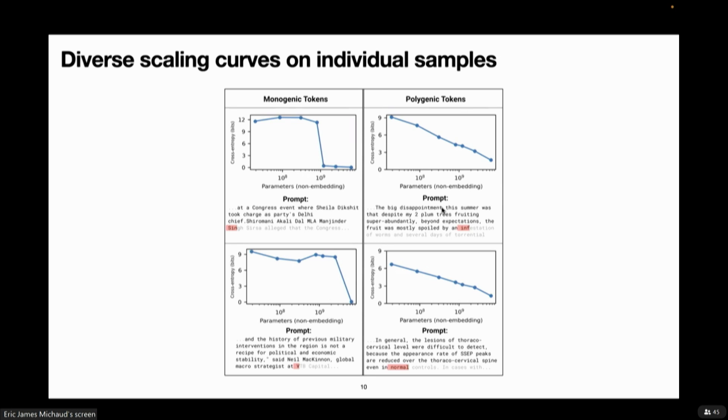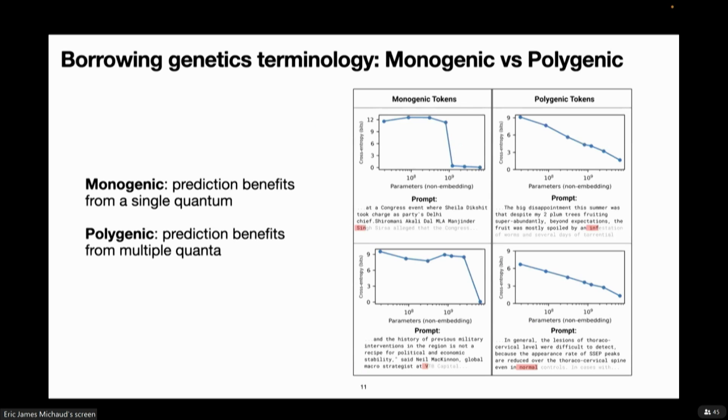So I guess if we're going to believe our theory, then maybe what's going on in these samples is that many of these quanta are improving the model's prediction a little bit, and they're being learned at different scales, leading to more gradual scaling. The idea here is maybe similar to how in biological organisms, there's some large number of genes that they have, and then for any particular trait, there's some smaller number of those genes which are relevant to influencing that trait. Maybe there's this large number of quanta that are present in the model, and then for any given prediction problem of predicting the next token, one or many of the quanta could be relevant, as we call these monogenic versus polygenic prediction problems.